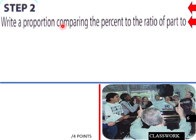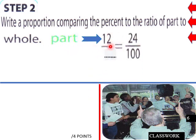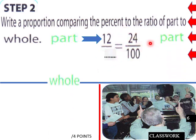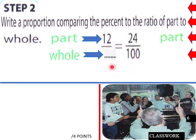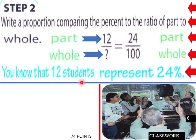Step 2: Write a proportion comparing the percent to the ratio of part to whole. The part is 12, so we write 12 over blank equals 24 over 100. We know 12 is 24 percent of something, and 24 percent is the same as 24 over 100. So 12 over what number equals 24 over 100 — that whole number represents the full choir.